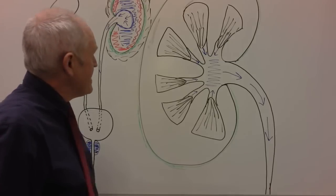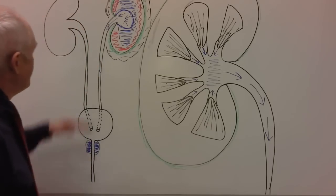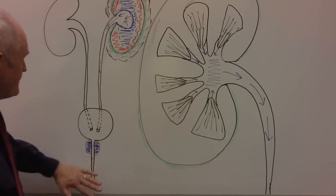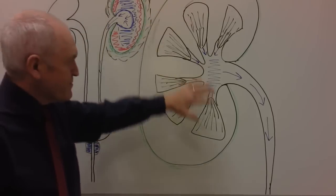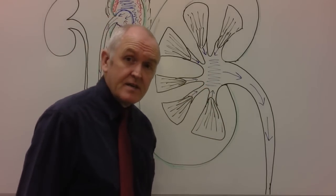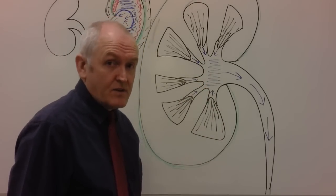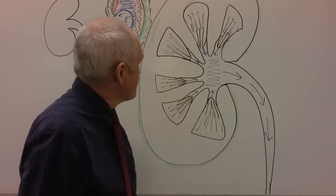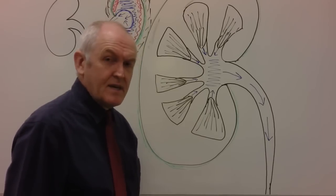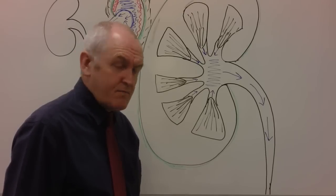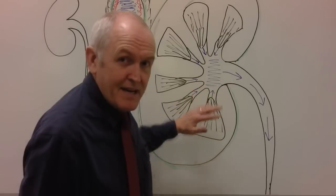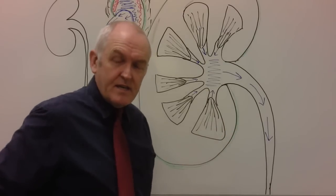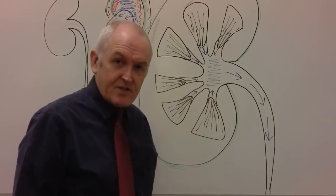So there we see the basic structure of the urinary system. The urinary system refers to the whole structure; when talking specifically about the kidneys we use the term renal system. The kidneys are essential to filter blood, remove impurities, maintain the homeostatic balance of the blood, and pass everything that is not needed into the urine to be eliminated and excreted from the body.